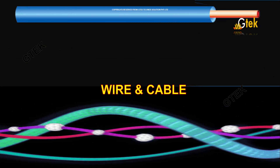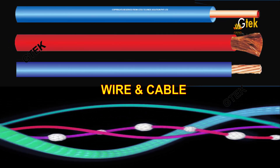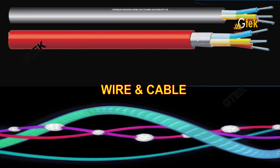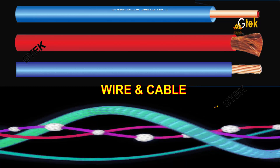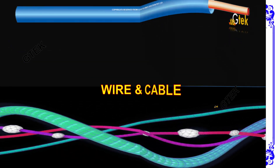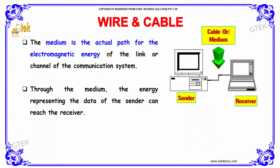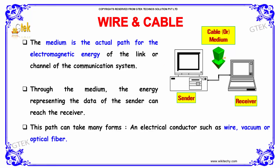Wires and cables are the most important and interesting area in the field of communication. The medium is the actual path for the electromagnetic energy of the link or channel of the communication system. You have the sender and the receiver, with a medium in between them. Through the medium, the energy representing the data of the sender can reach the receiver.